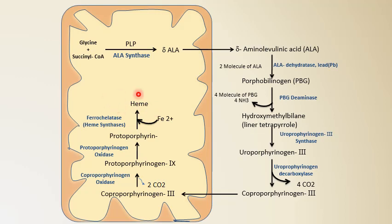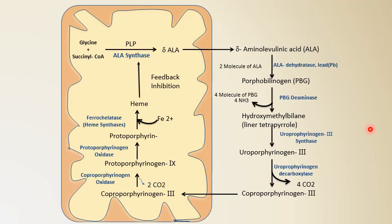So that is how heme is synthesized. Heme itself performs feedback inhibition of the first step of heme synthesis — the condensation of glycine with succinyl-CoA. The last three steps occur in the mitochondria while the second, third, and fourth steps occur in the cytosol.